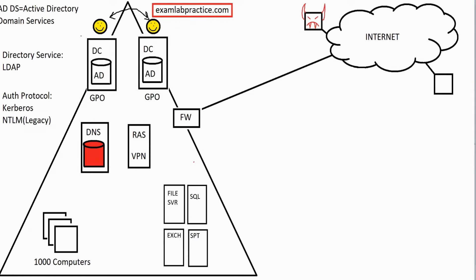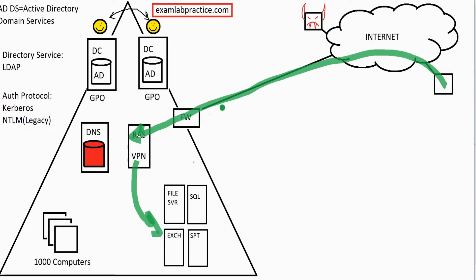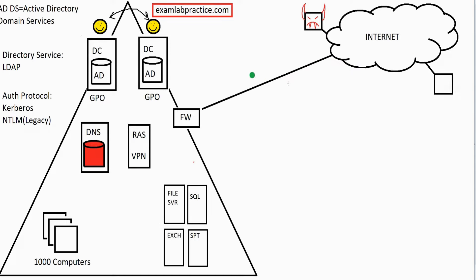This allows a VPN tunnel to be created, which means you have encrypted communications going through to that RAS server. From there, the RAS server allows you to access other resources securely. The hacker will not be able to see the traffic flowing through because it's all encrypted — they would only be able to see that traffic was going up to the firewall, and that would be it.